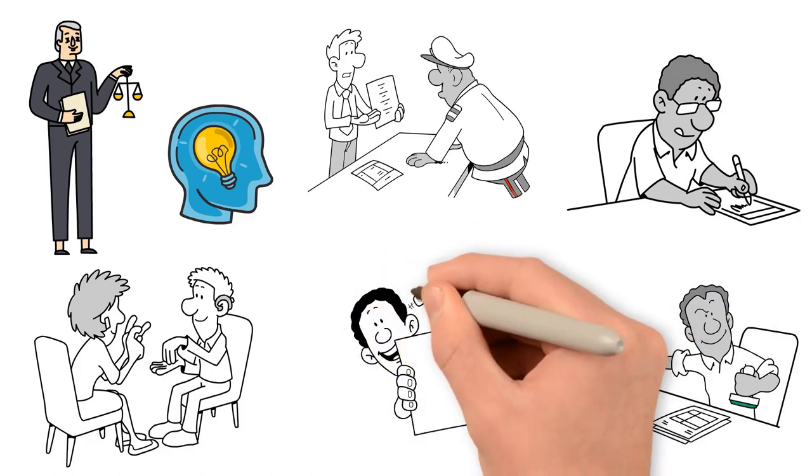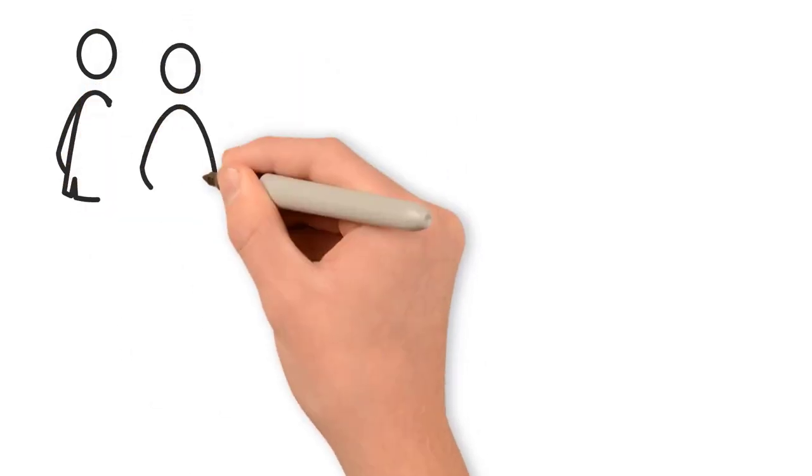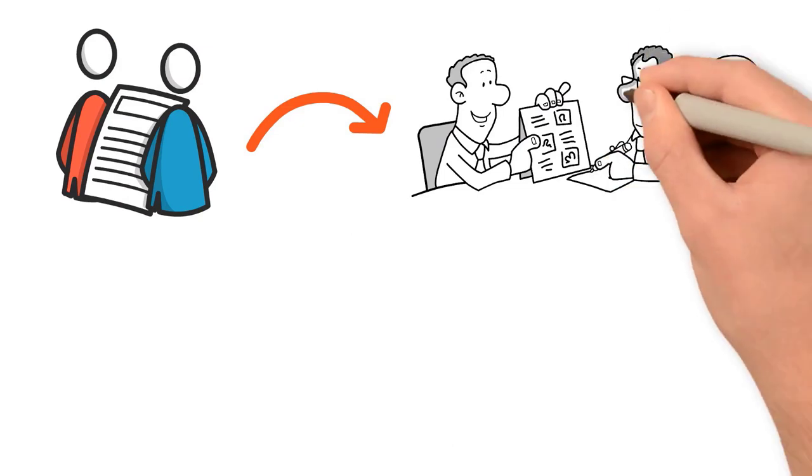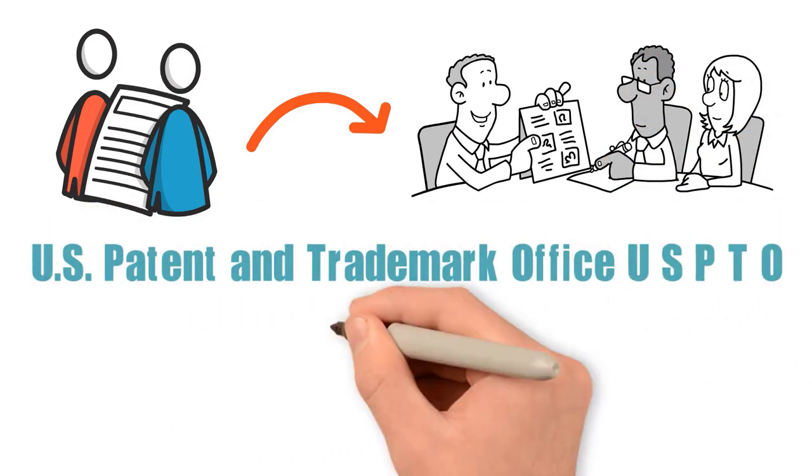Let's examine the procedures needed to apply for a patent on your own. Individual inventors who submit patent applications without the assistance of a lawyer must be assisted by patent examiners at the U.S. Patent and Trademark Office, USPTO, according to federal law.